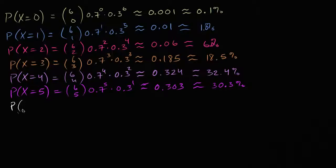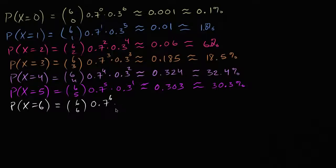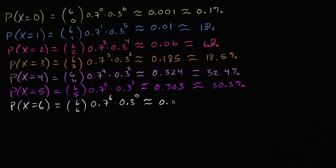The probability that I make all six is equal to six choose six, times 0.7 to the sixth power, times 0.3 to the zeroth power. Six choose six is one and 0.3 to the zero is one, so it's really just 0.7 to the sixth power, which is approximately 0.118 — or 11.8%.